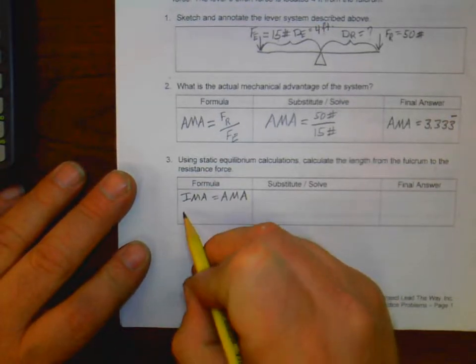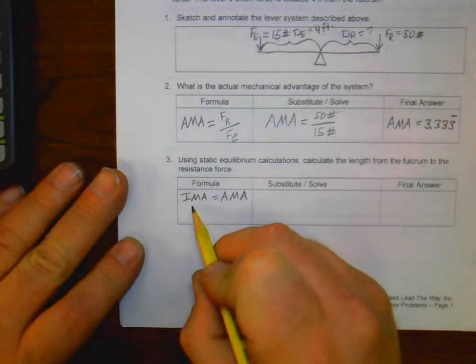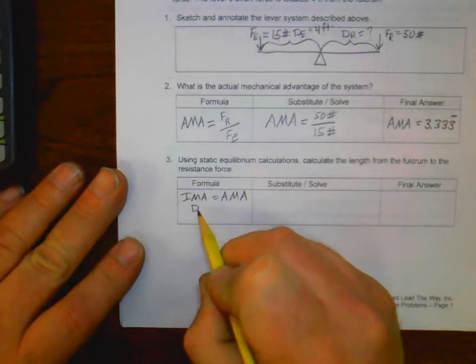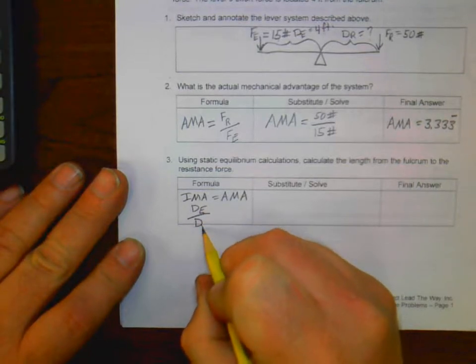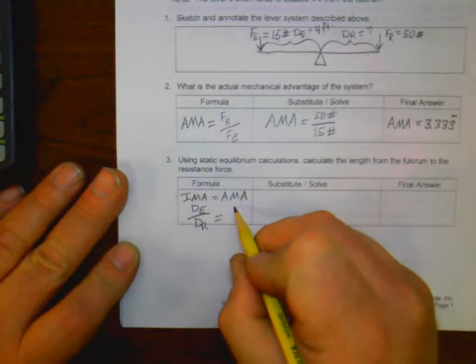So we're going to substitute up here DE over DR equals FR over FE. That's our equation.